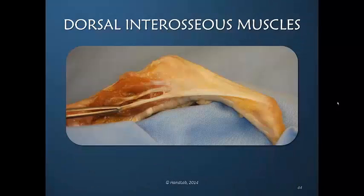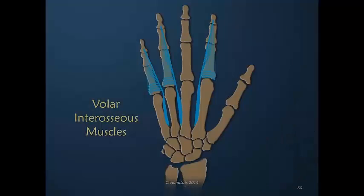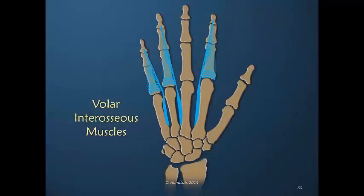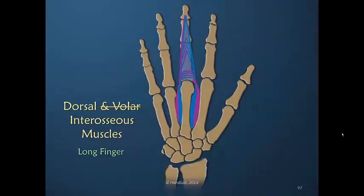Here we see the tension directed to the most volar one, which is literally the lateral band. Three interosseous muscles all insert into the dorsal apparatus even though they are considered to be primary adductors. On the long finger, I have crossed out volar interosseous muscles because there are none.